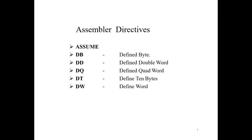An assembler directive is a statement to give direction to the assembler to perform the task of assembly process. The assembler directives control organization of the program and provide necessary information to the assembler to understand assembly language programs and generate machine codes. They indicate how an operand or a section of a program is to be processed by the assembler. An assembler supports directives to define data, to organize segments, to control procedures, to define macros, etc.